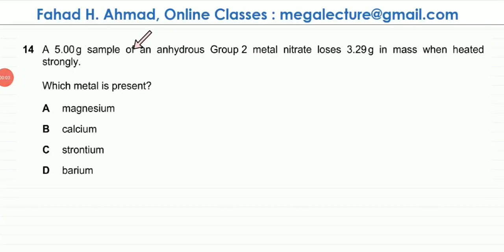The following question reads that a 5 gram sample of an anhydrous Group 2 metal nitrate loses 3.29 grams in mass when heated strongly, and you're being asked which metal is going to be present.